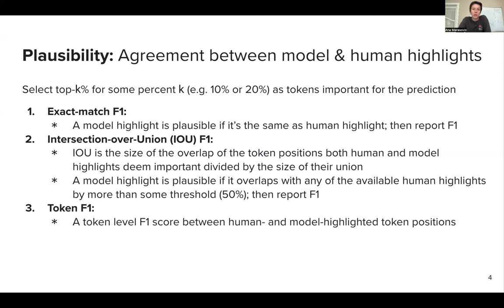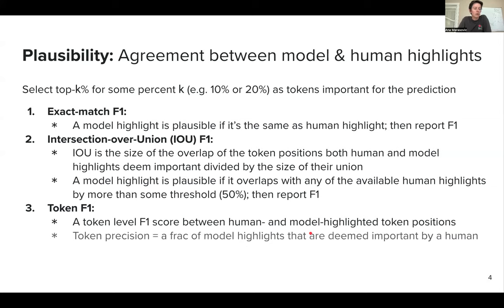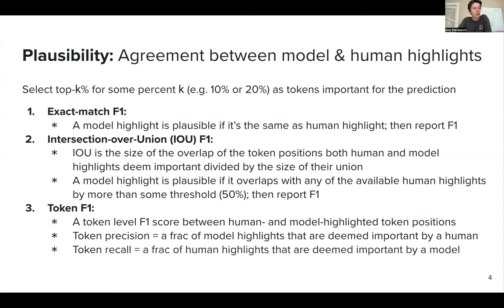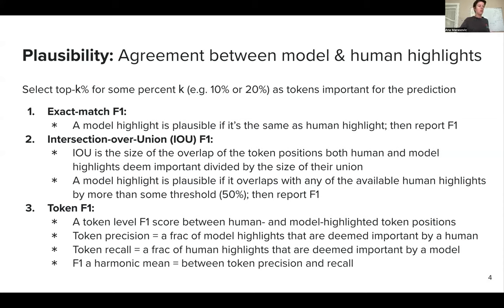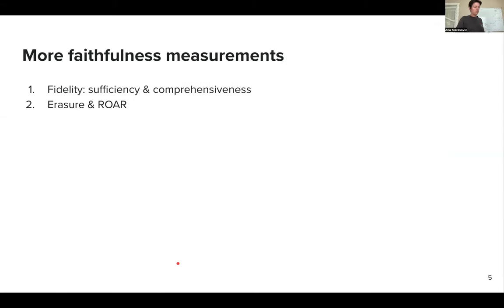Similarly, you can have a token-level F1 score between human and model highlighted token positions — this is especially common in NLP. There are tasks like question answering where the goal is to find a span in text that answers a question, and this kind of stems from that. Basically, we calculate token precision — the fraction of model highlights that also occur in human-authored highlights — and token recall — the fraction of human highlights also selected by the model as important. Then you calculate F1 as the harmonic mean between token precision and token recall. That covers plausibility — you have multiple options.